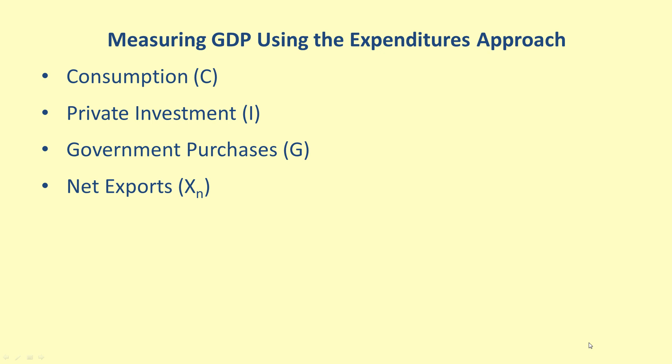Therefore, using variables C, I, G, and XN, we get the equation GDP equals C plus I plus G plus XN. This gives us the total value spent on goods and services.